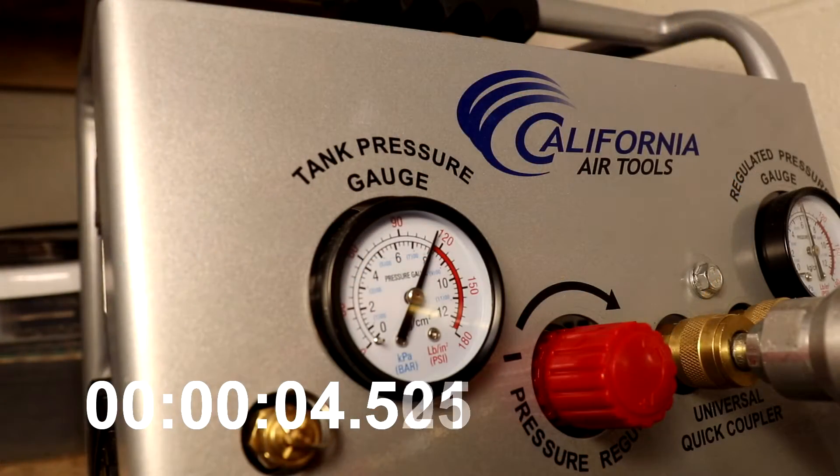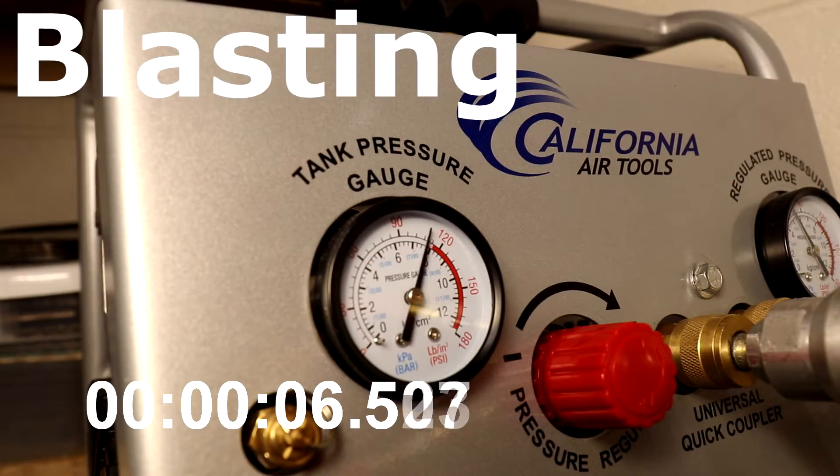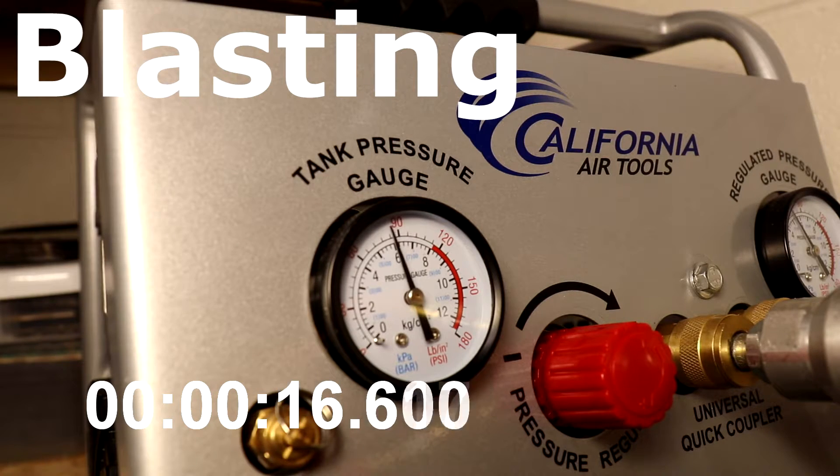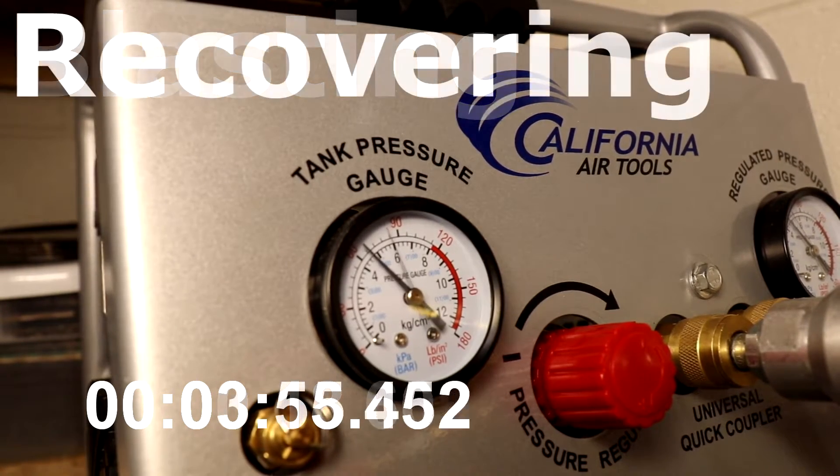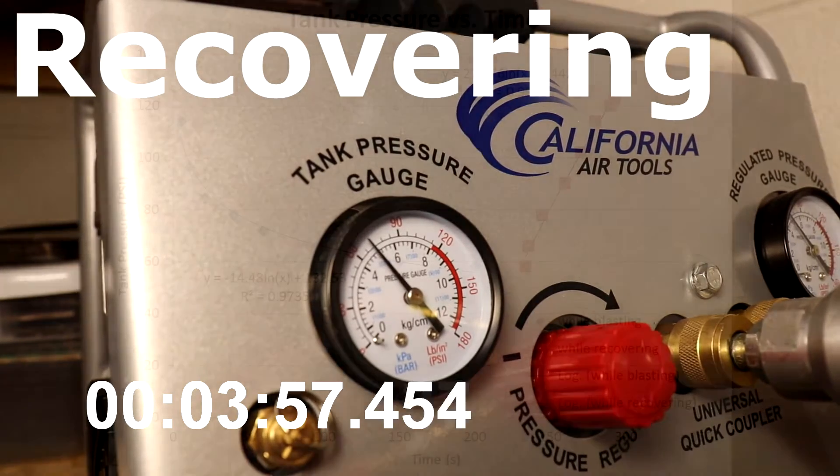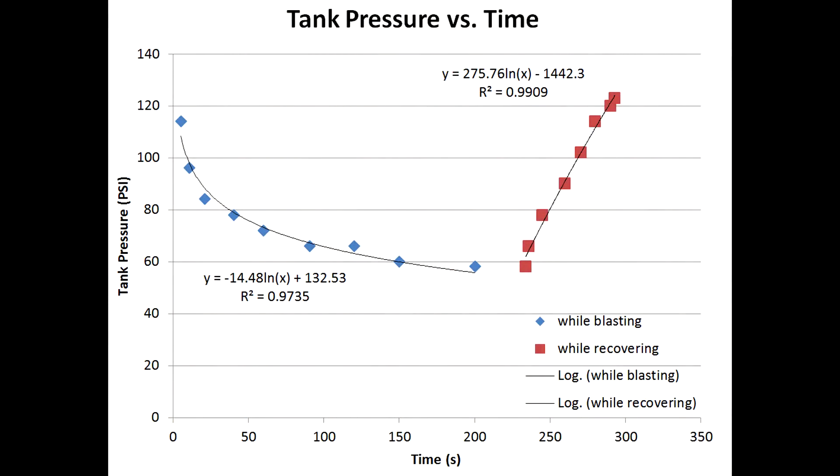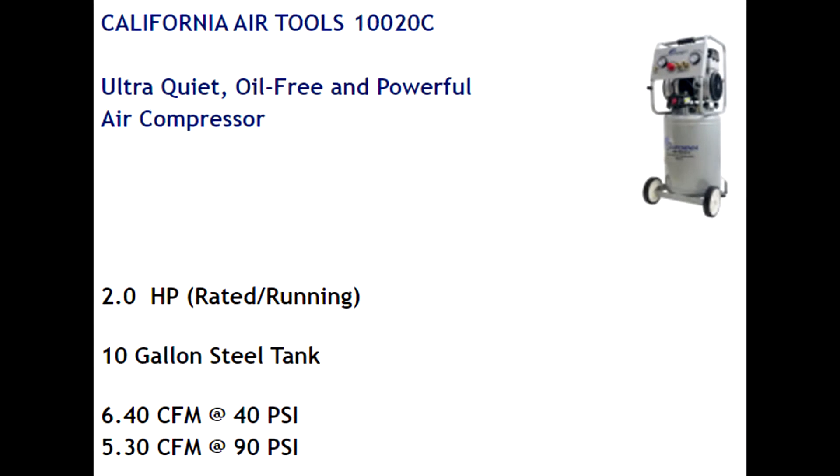To measure the performance of the air compressor, we'll measure the tank pressure during blasting and then during recovery. With the 5/64th inch orifice, the air compressor is able to maintain the required CFM at 60 psi. And while I do have doubts about the charts that show CFM requirements for various orifice sizes, I also suspect that California Air Tools may be a little optimistic in their specs. Regardless, for my needs, I'm very satisfied with this combination of air compressor and sandblaster.